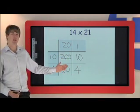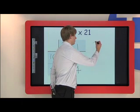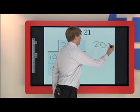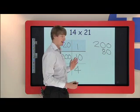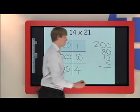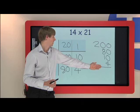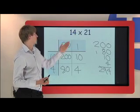So now we have all our boxes worked out, we just need to add them together using simple addition. So we have 200 and 80 and then a 10 and then 4 to finish. So we add up the right hand column first. So we have 0 and 0 and 0 and 4, and then we have 8 and 1 to give us 9, and then 2 to make 294. And that is the answer to 14 times 21.